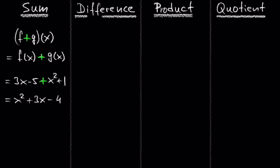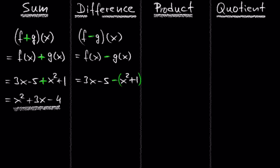What about the difference of these two functions? f minus g of x equals f of x minus g of x equals 3x minus 5 minus x squared plus 1. Be careful here and don't forget the parentheses, because we are going to subtract the whole function g of x and not just x squared. If you don't put parentheses here, you're not going to subtract the 1.